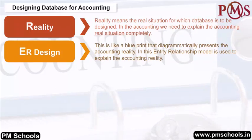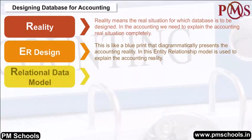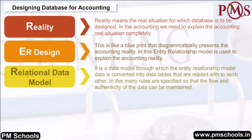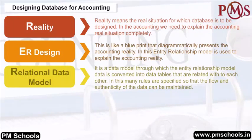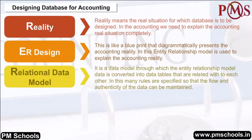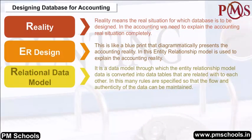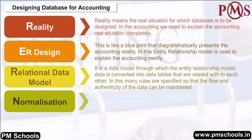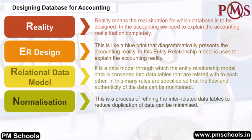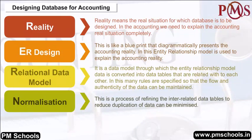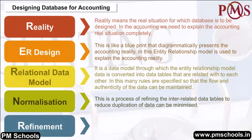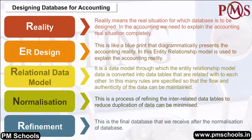Relational Data Model: It is a data model through which the entity relationship model data is converted into data tables that are related with each other. Many rules are specified so that the flow and authenticity of data can be maintained. Normalization is a process of refining interrelated data tables to reduce duplication of data. Refinement is the final database received after normalization.